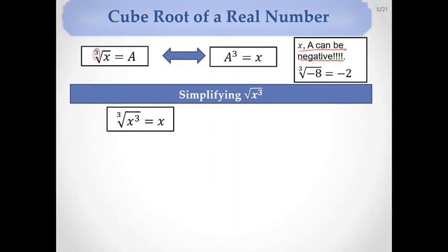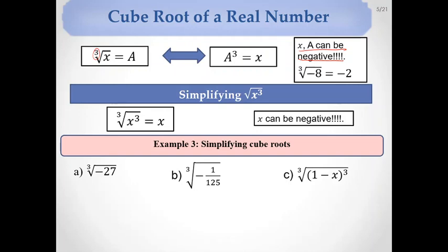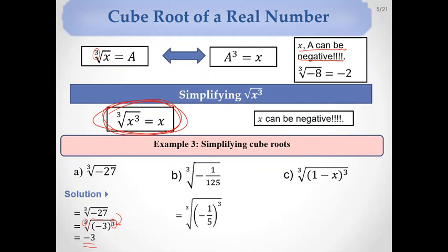When simplifying cube roots, the cube root of x³ equals x, and x can be negative here. For example, the cube root of (−3)³ equals −3. Likewise, the cube root of (−1/5)³ equals −1/5. And the cube root of (1 − x)³ equals 1 − x directly.